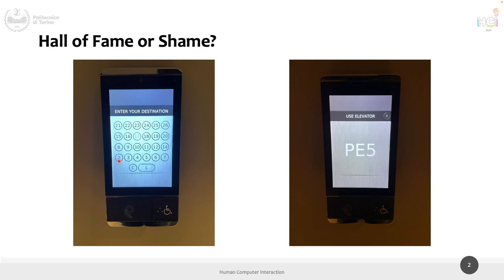One suggestion was using color — for instance, making the first five floors red. But this is a grayscale display. Even with color, you introduce another layer of information and the risk of color-blindness issues. If not done properly, color coding adds cognitive burden — why are the first five floors red and the others yellow? Is there a reason, or is it random?